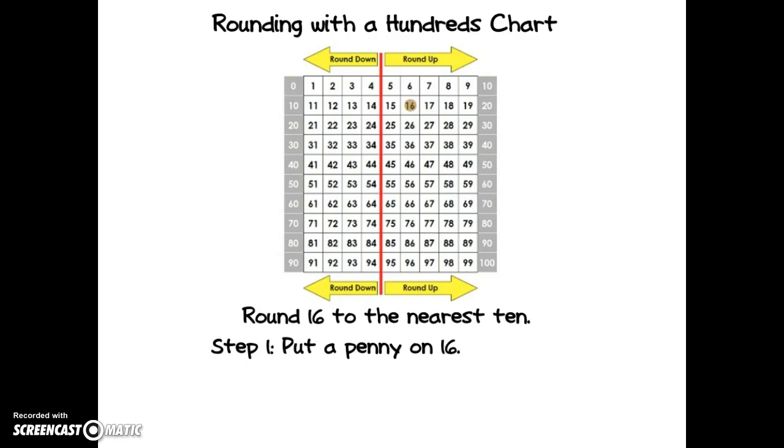Let's try rounding sixteen to the nearest ten. My first step is to put a penny on sixteen. Next I'll put nickels on the nearest tens, which are ten and twenty.